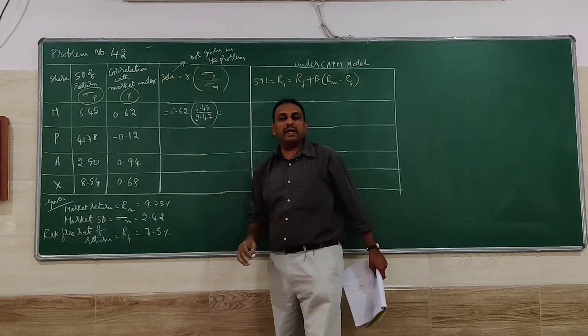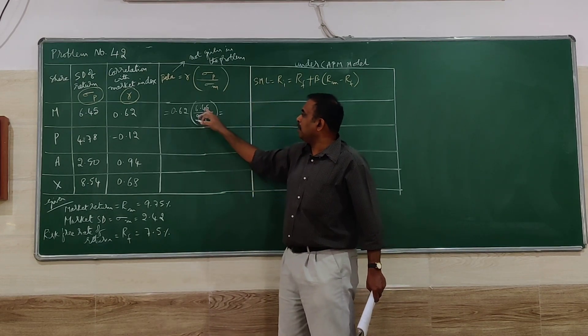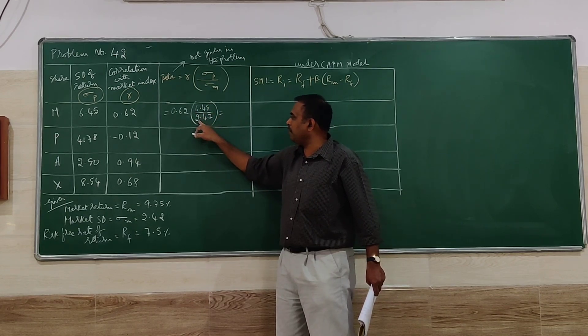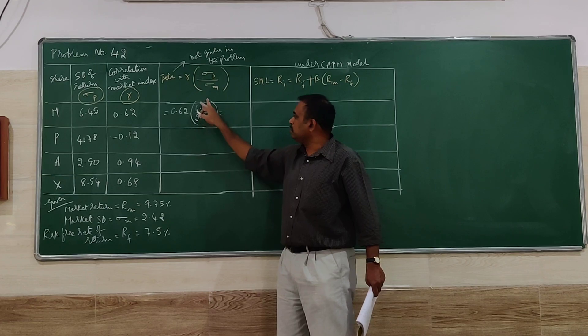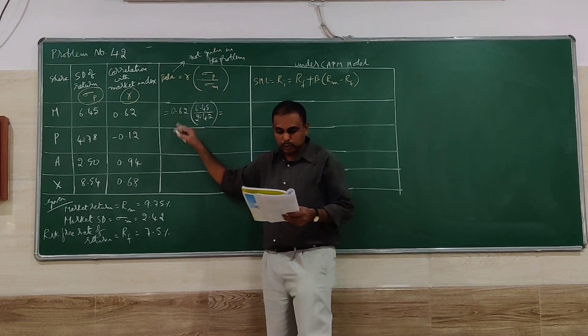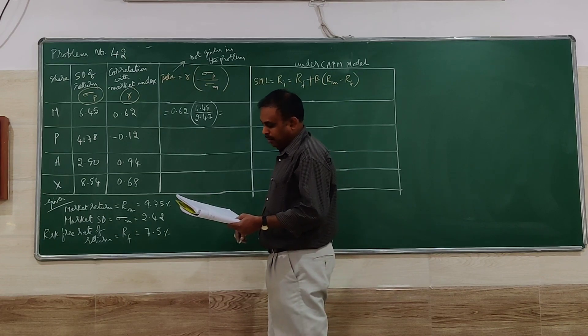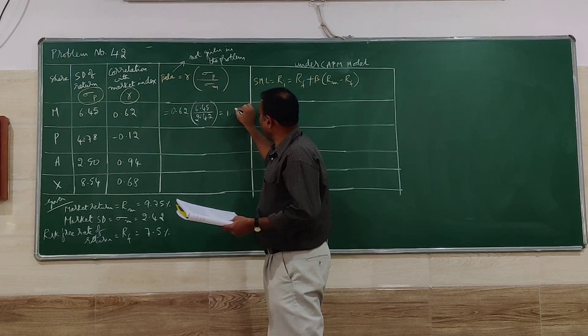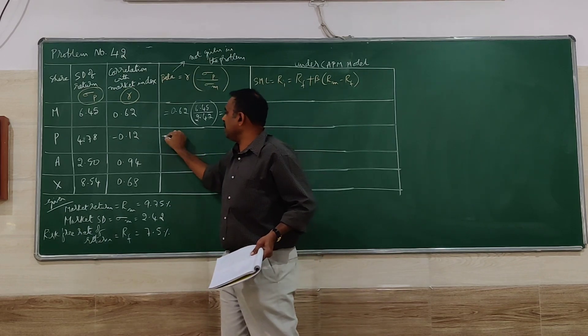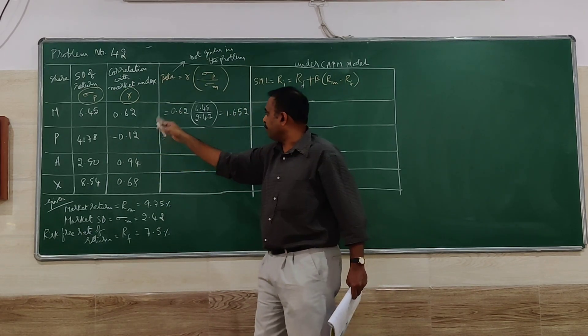We have to be very careful when multiplying. First simplify 6.45 divided by 2.42, then multiply by 0.62. When you do that you get 1.652. Similarly we have to find for P.